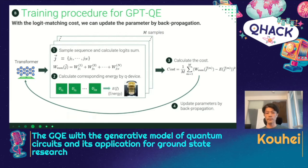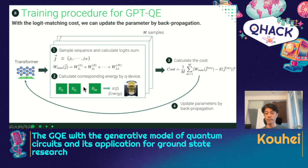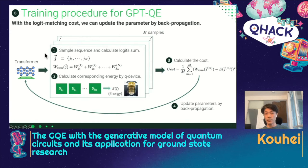This is the whole training process in GPTQE. The transformer generates a sequence of tokens and also calculates the logit sum. By using the quantum device, we calculate the corresponding energy. We calculate the cost by using the logit matching technique. By using backpropagation, we can update the parameters inside the transformer. By repeating this process, we train the transformer so that low energy states are likely to be generated.